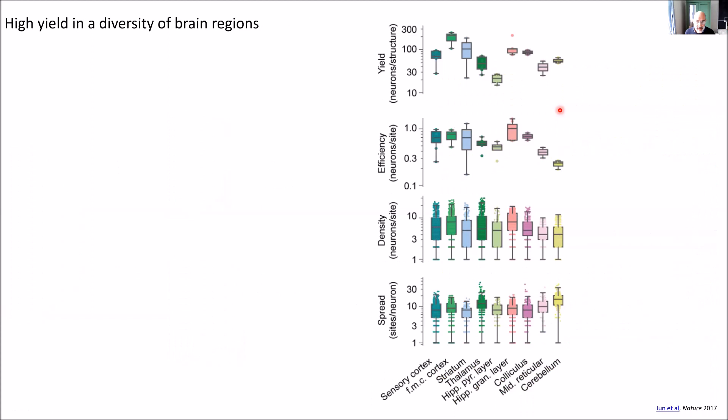Some statistics. You can say for these various different structures, sensory cortex, thalamus, various layers of the hippocampus, cerebellum, how many neurons are you able to get per structure with one Neuropixels probe? You can go from 200 here to very few in the granular layer because it's thin. But in general, you have high efficiency, meaning you're not wasting sites. You tend to have almost always one well isolated neuron per site. And the spikes of one neuron appear on around 10 sites, which is great. That means it really helps in the spike sorting process.